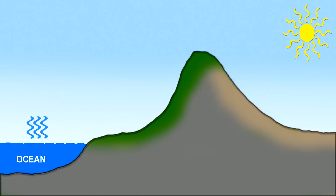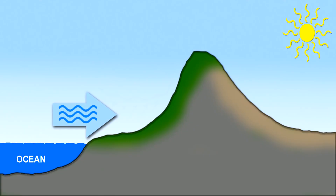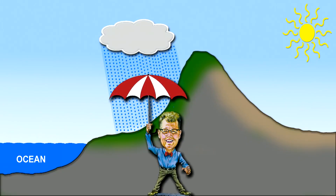Here's how it works. Evaporation on the surface of the ocean creates moist air. Prevailing winds push the wet air inland until it hits the base of the mountains. The air is forced to rise, and as it lifts, it expands and cools. Cooler air can't hold as much moisture, so clouds form and it rains a bunch, resulting in a lush, green landscape.